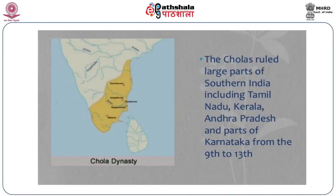The present map shows the extension of the Chola Empire throughout the southern Indian territories. The Cholas ruled a large part of southern India including Tamil Nadu, Kerala, Andhra Pradesh, and some parts of Karnataka from the 9th to 13th century AD.